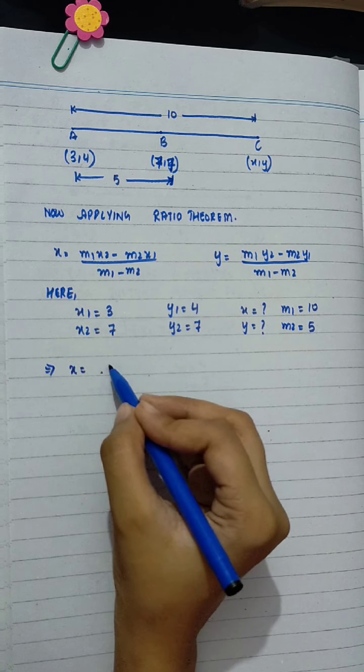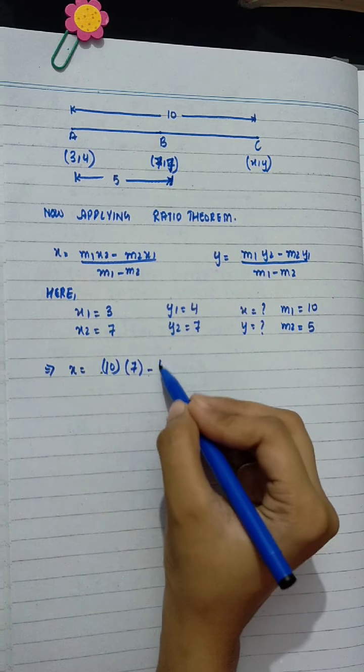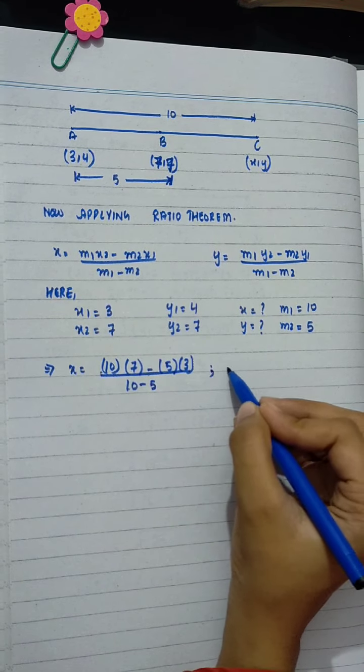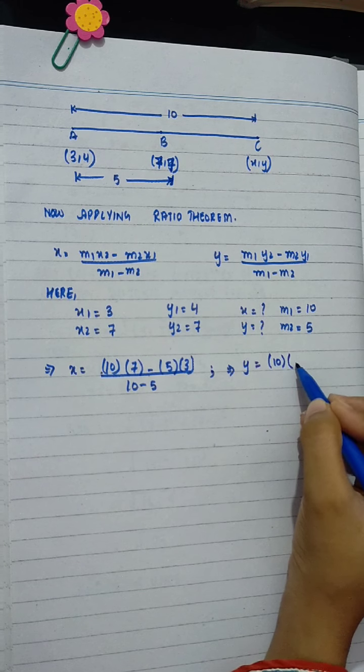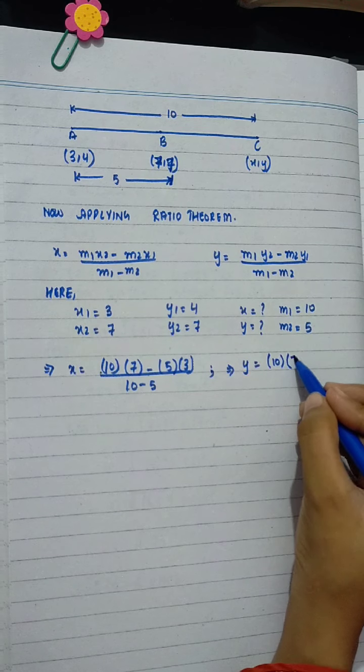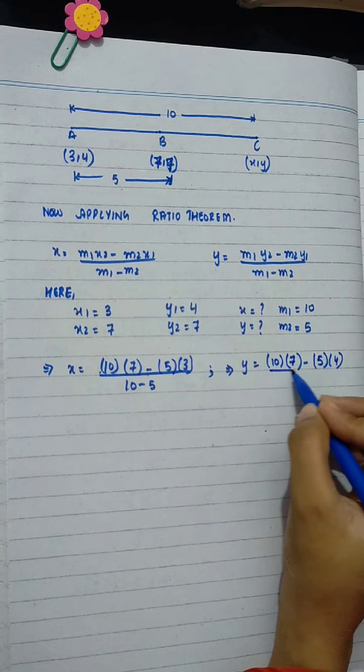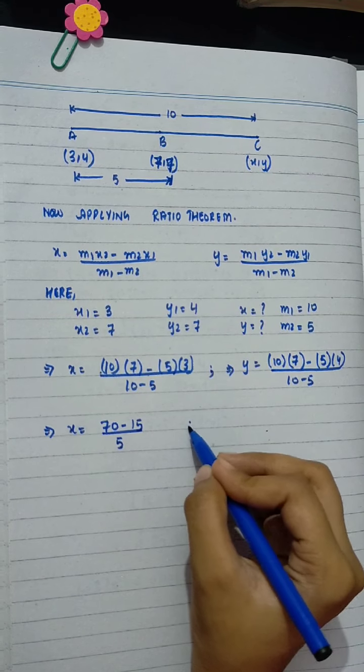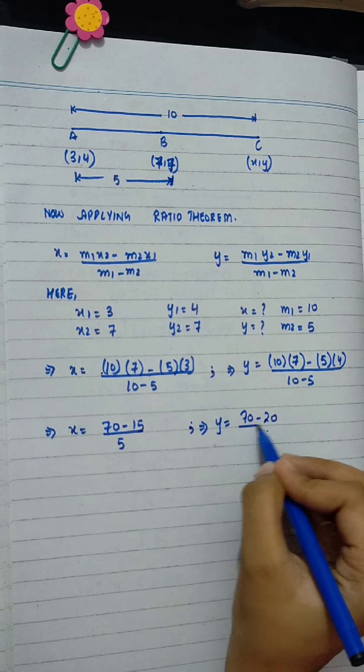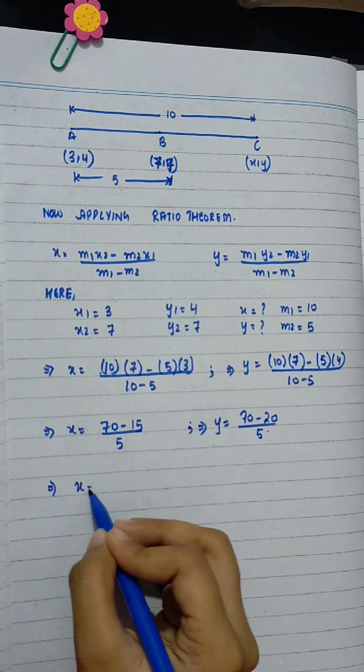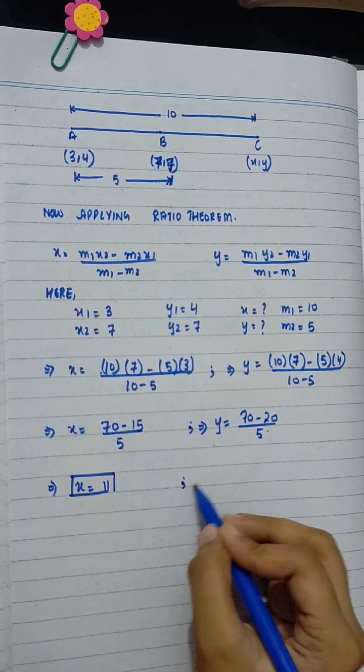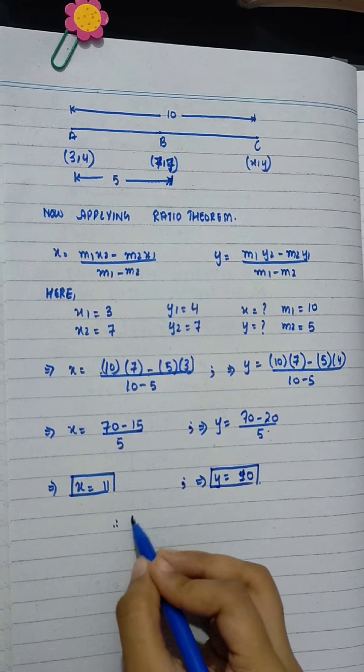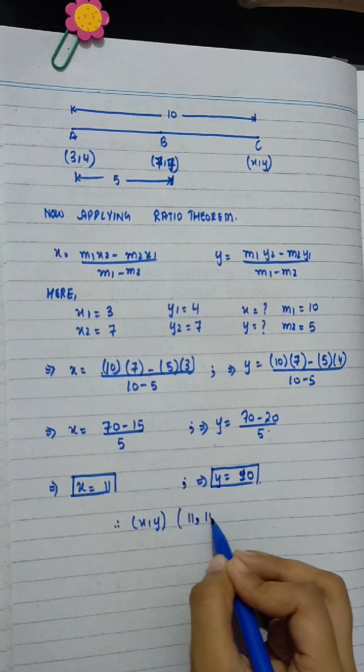Value substitute: X equals 10 times 7 minus 5 times 3 divided by 10 minus 5. Y equals 10 times 7 minus 5 times 4 divided by 10 minus 5. That gives 70 minus 15 divided by 5, and 70 minus 20 divided by 5. Calculating, X equals 11 and Y equals 10. Therefore, X comma Y is 11 comma 10.